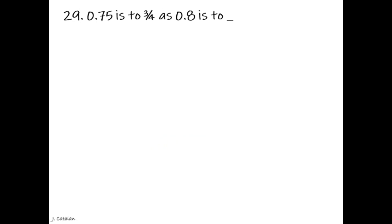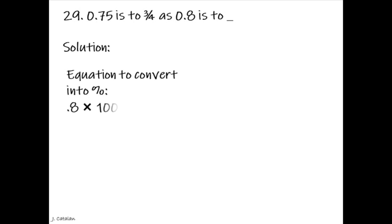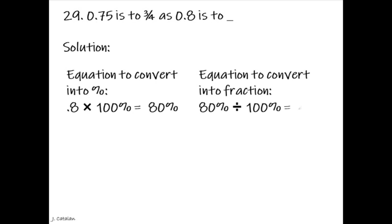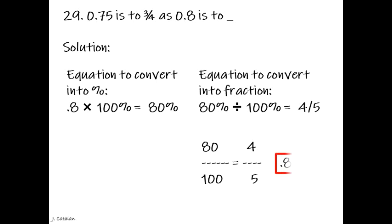0.75 is to 3 quarters as 0.8 is to underscore. Solution. I will share my way of solving this. Converting 0.8 to percent: 0.8 multiplied by 100% equals 80%. Converting to fraction: 80% divided by 100% equals 4 fifths. Finding a divisor: 20 divides both 80 and 100. 80 divided by 20 is 4, and 100 divided by 20 is 5. The fraction of 0.8 is 4 fifths.